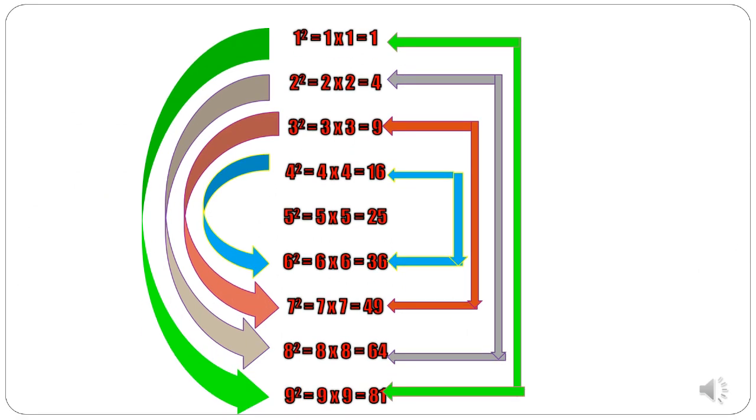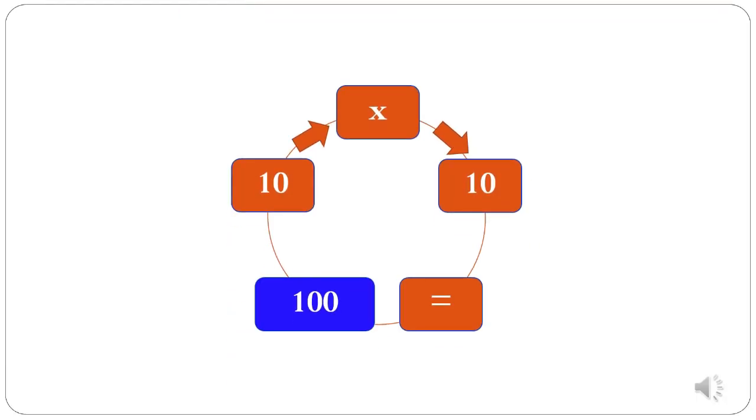Now students, let's go through the squares of first 9 natural numbers. 1 square is 1, 2 square is 4, 3 square is 9, 4 square is 16, 5 square is 25, 6 square is 36, 7 square is 49, 8 square is 64, 9 square is 81. 10 square is 10 into 10 equal to 100.